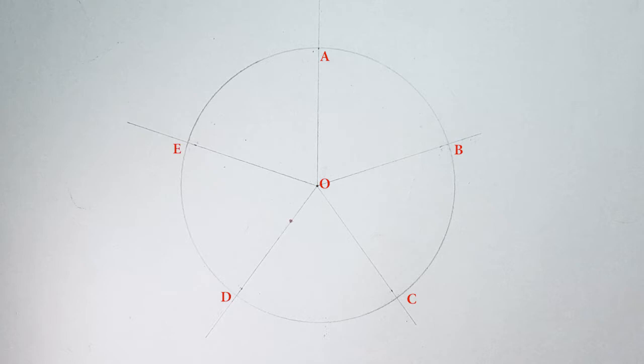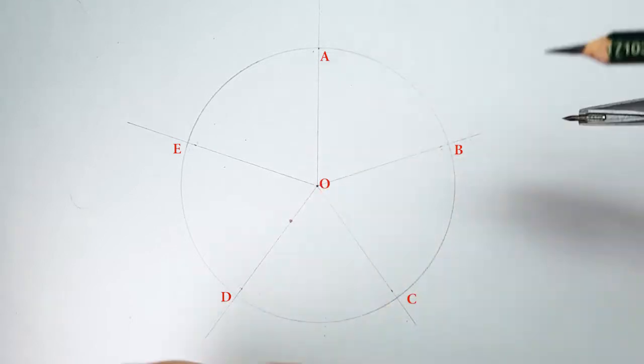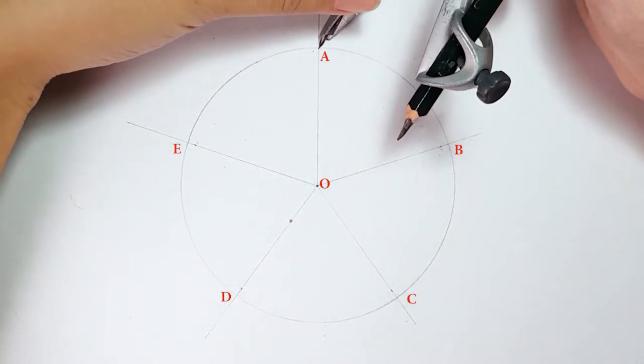Now, we're going to divide the radius length into half. With the same radius length, place your compass on point A,